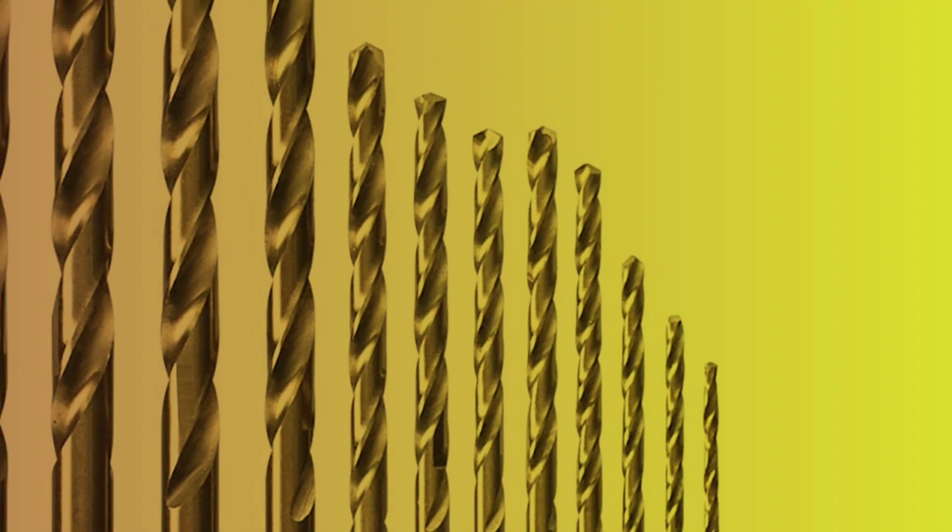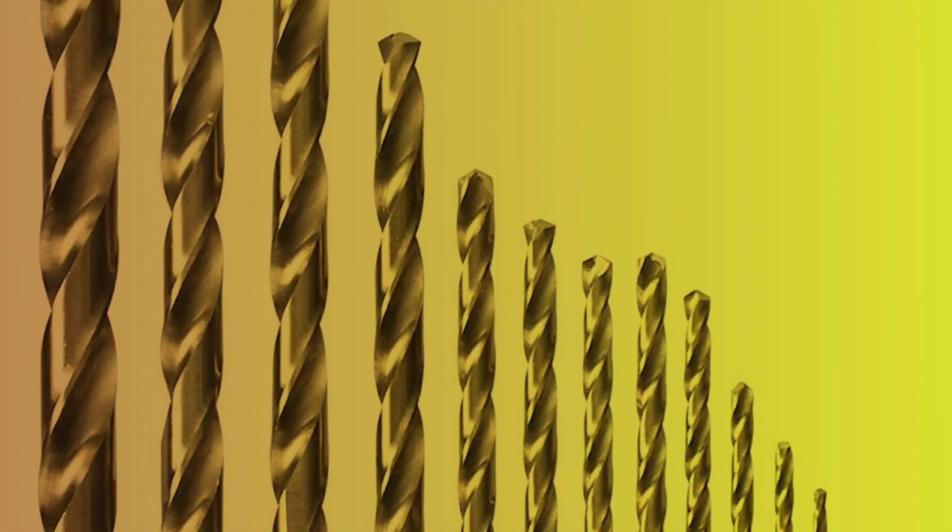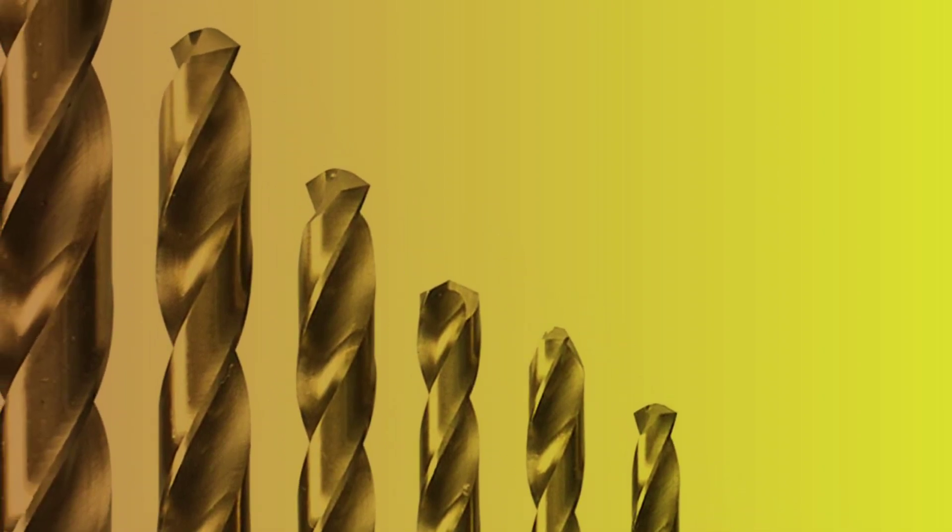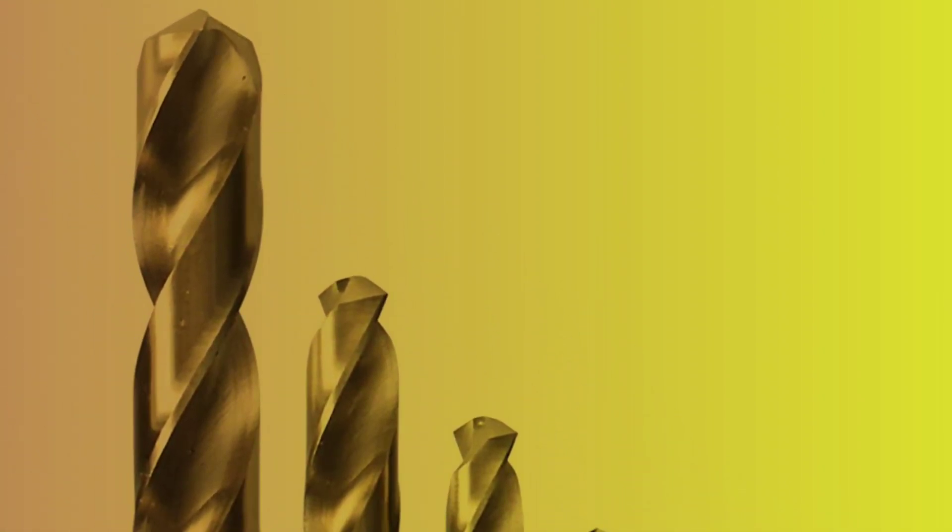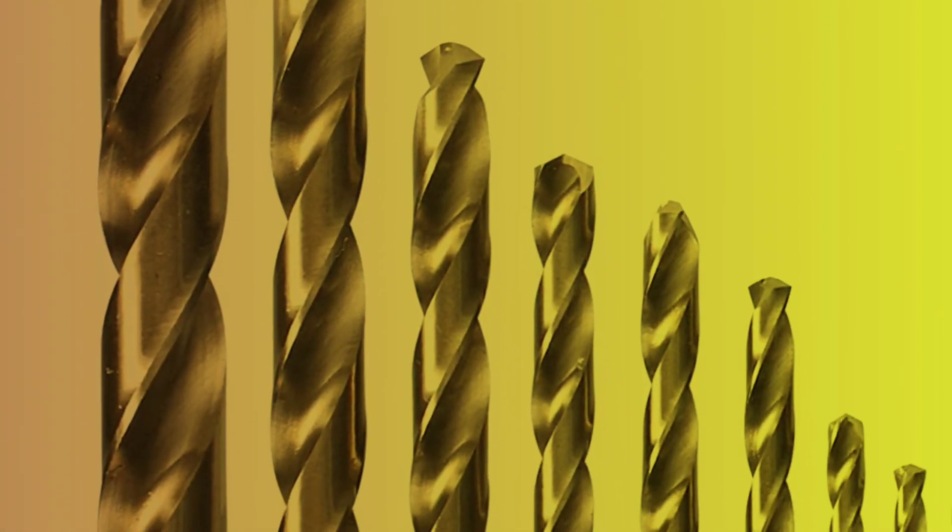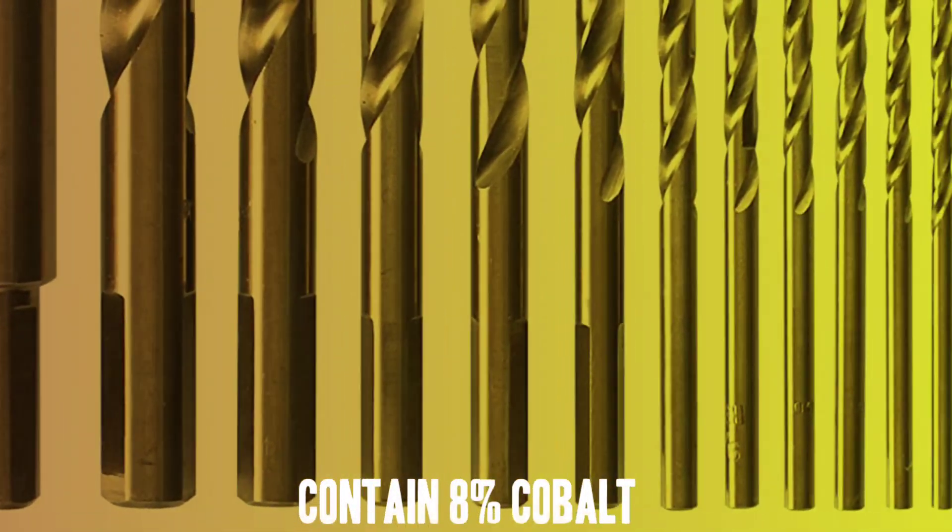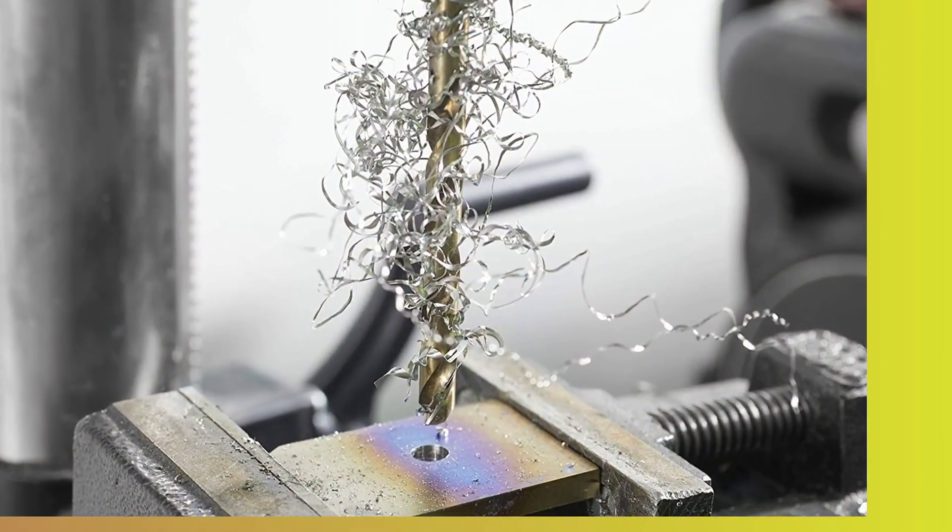Whether you need to drill a small hole for a screw or a larger hole for a pipe, this set has you covered. One of the key features of the Bosch C014B Drill Bit Set is its cobalt M42 construction. These drill bits are made from cobalt M42 alloys that contain 8% cobalt, which is known for its high heat resistance and longevity.